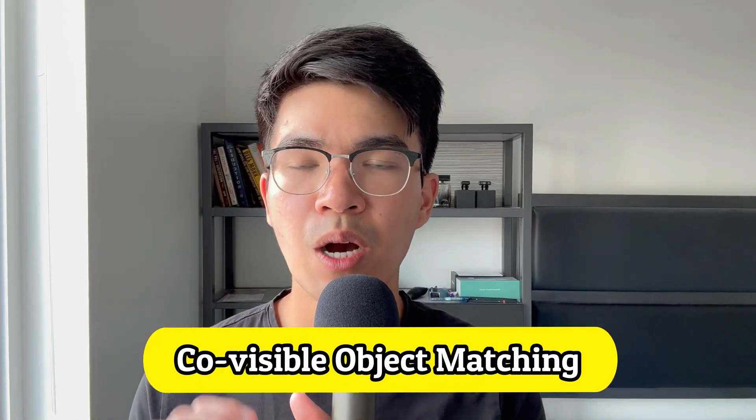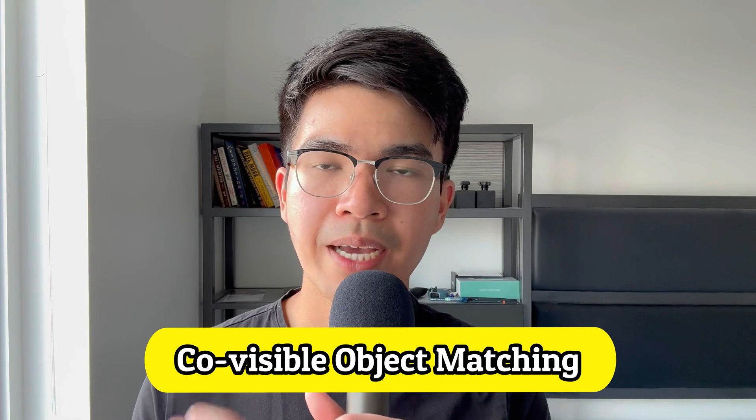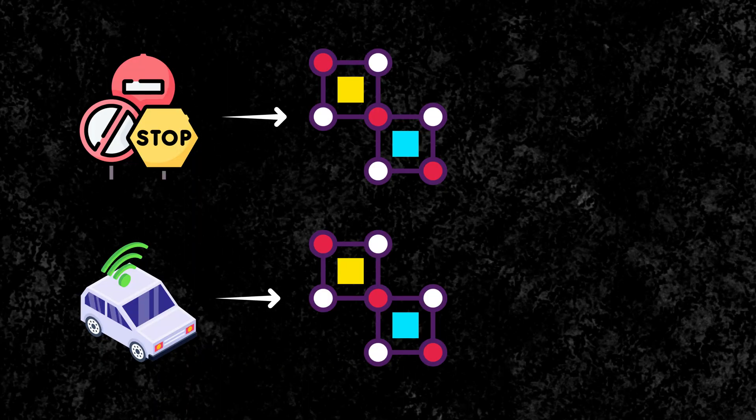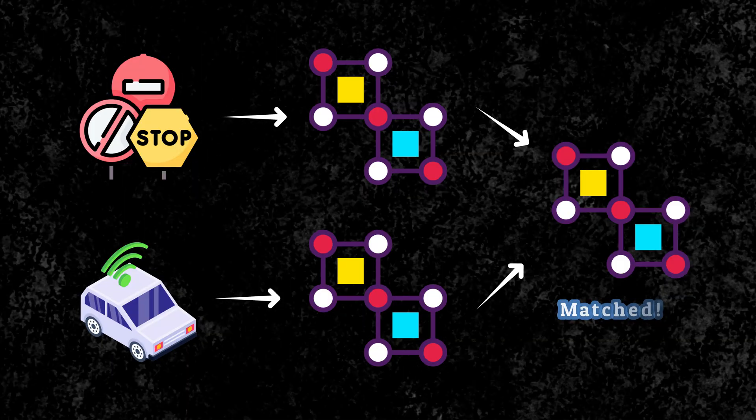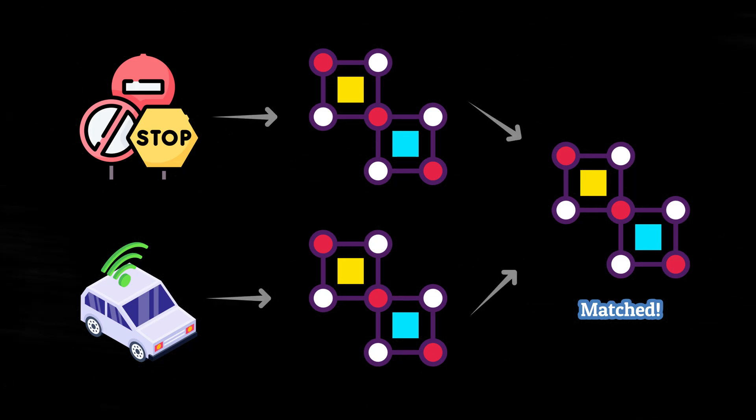The next phase is co-visible object graph matching. The basic idea is to map objects that appear in both the infrastructure detections and the vehicle detections. We frame this as a graph problem — each bounding box is a node, and the distance between them is an edge.